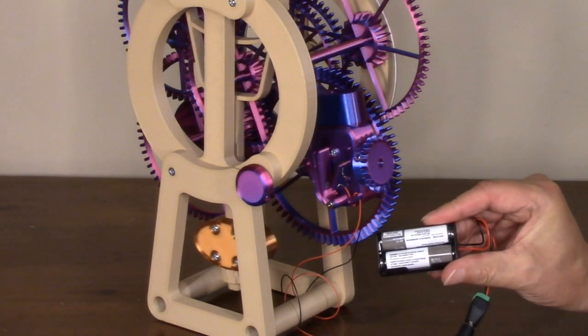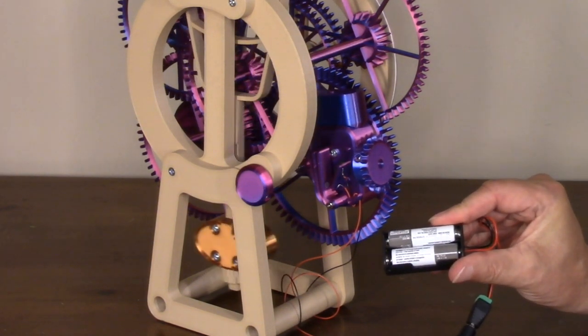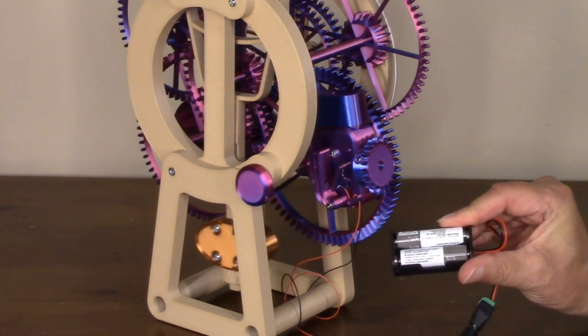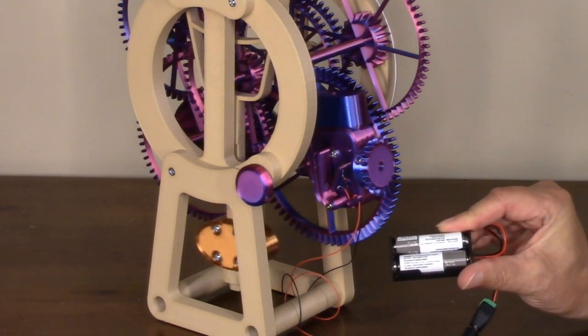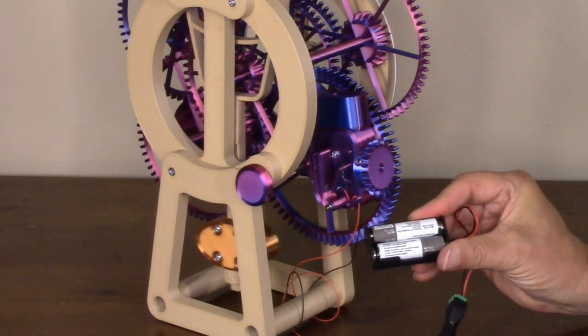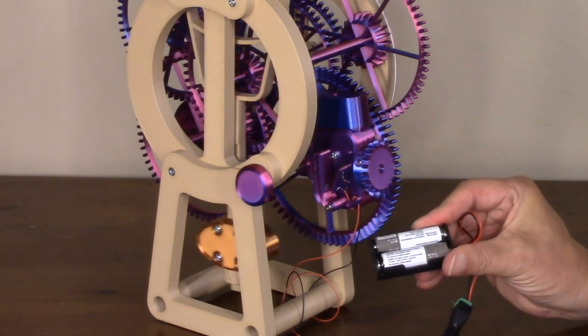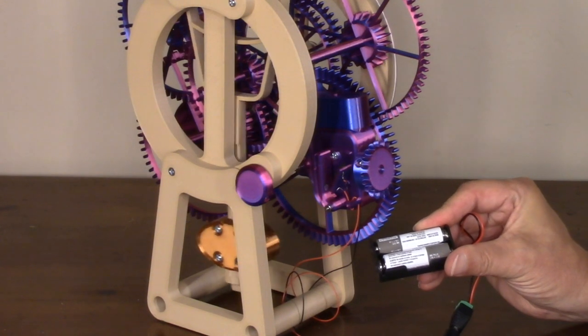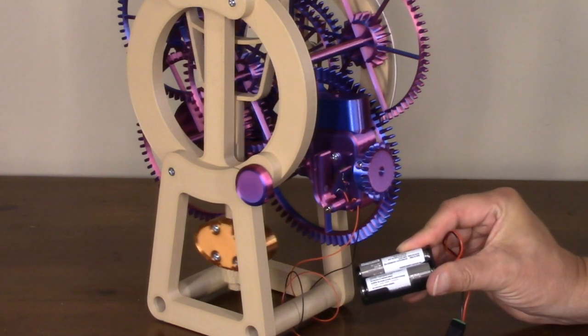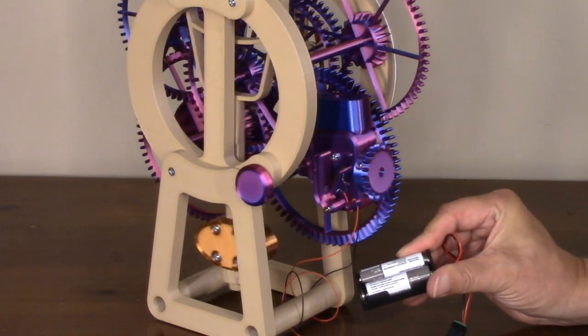This clock right now is running off of two double-A batteries. It's been running for about a month now and these batteries were already almost dead when I put them in. In fact, I pulled them out of the TV remote control because they were too weak to work the remote control. There's still enough power in these to power the tiny N20 motor in the rewind mechanism.